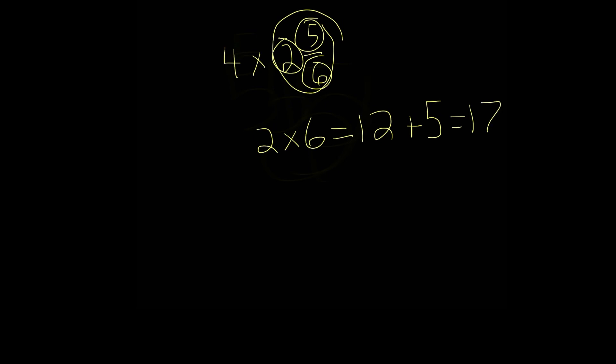12 plus 5 is 17. And this is our numerator of our improper fraction. So 17 is the numerator, and remember, we keep the denominator the same, so we can just bring that 6 here.